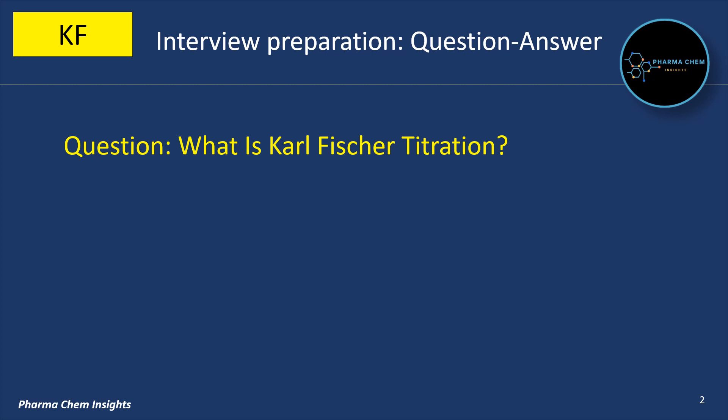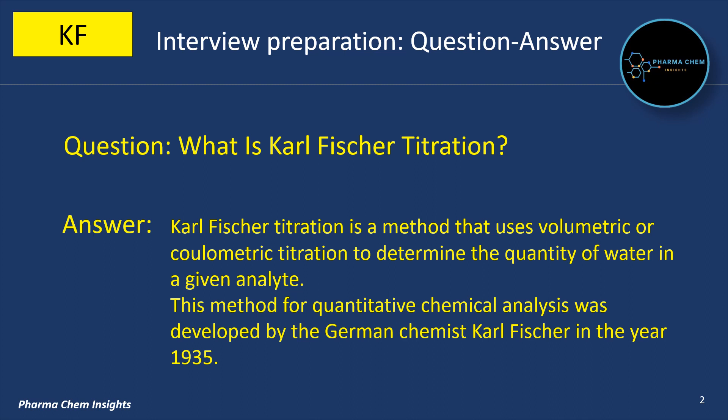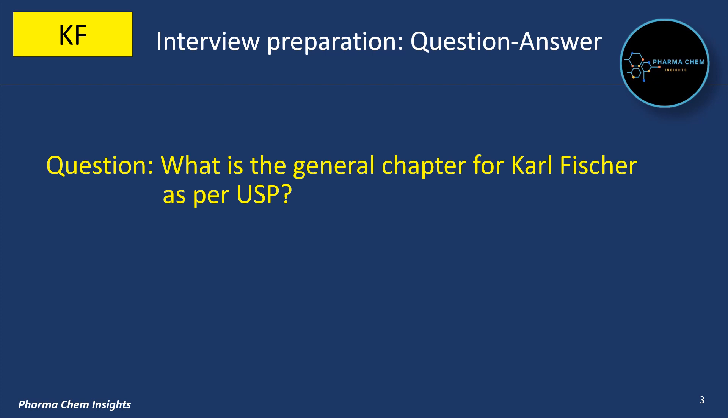First question: What is Karl Fischer Titration? Karl Fischer Titration is a method that uses volumetric or coulometric titration to determine the quantity of water in a given analyte or sample. This method for quantitative chemical analysis was developed by the German chemist Karl Fischer in the year 1935.